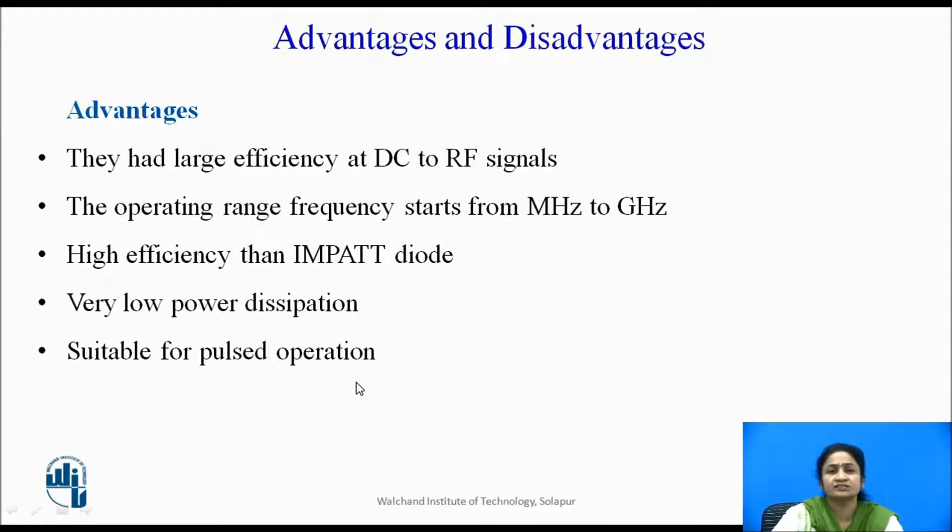Advantages and disadvantages of this TRAPATT diode. Advantages: As they are working at microwave frequency with high efficiency, they have larger efficiency at DC to RF signal generation. The operating range of this frequency starts from megahertz to gigahertz. Compared with the IMPATT diode, they have high efficiency, they have low power dissipation and are suitable for pulse operation, means the input signals are in the form of pulses, RF signals.